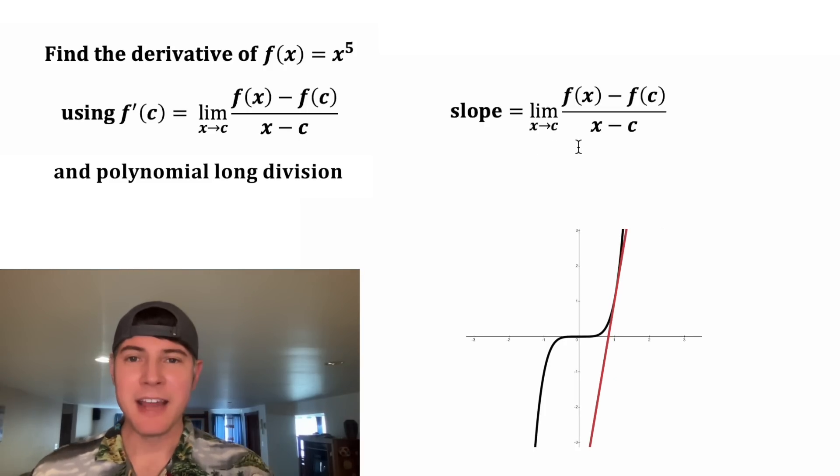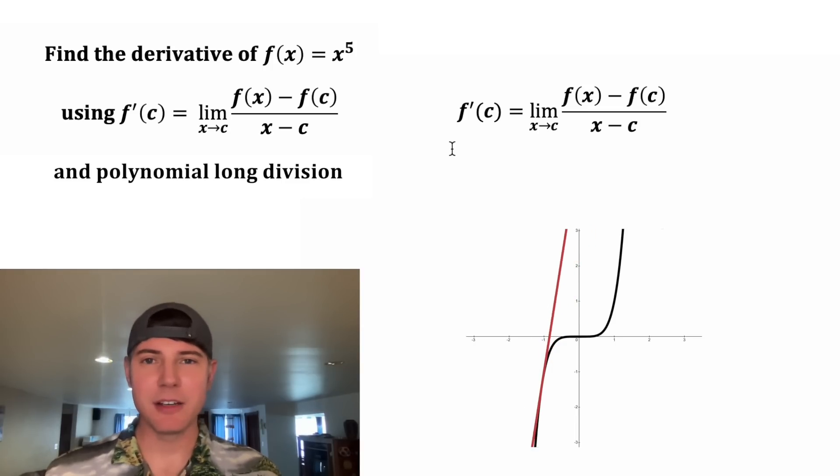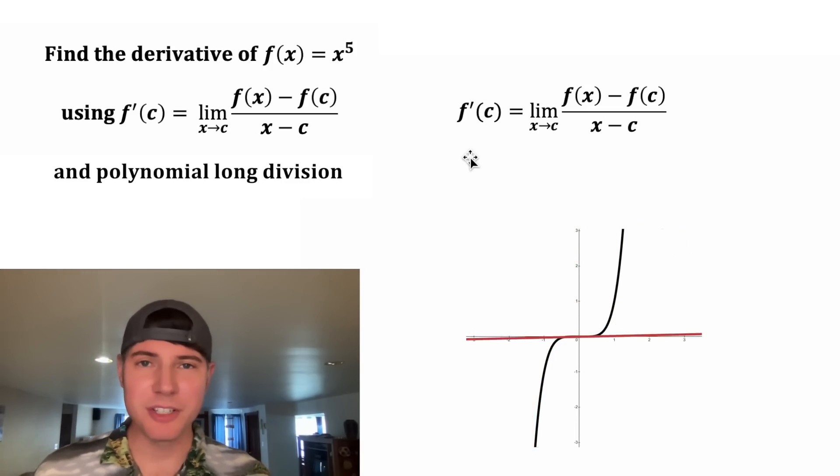And now we have the instantaneous slope. So we can change this to f'(c), which is a notation for derivative or instantaneous rate of change. That's a high-level summary of what this is all asking for. Now let's do the math.